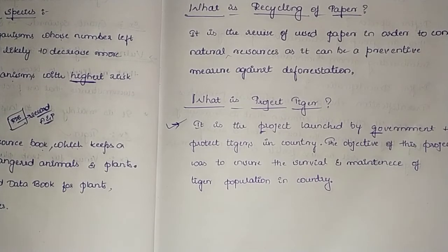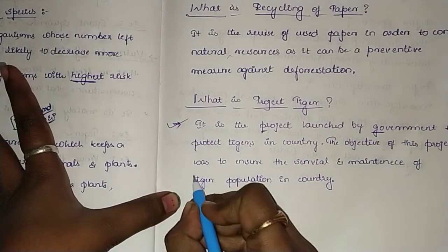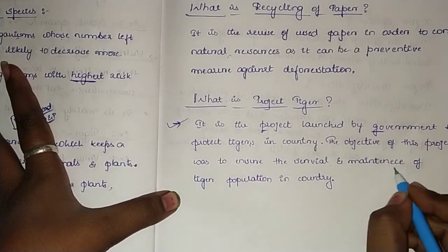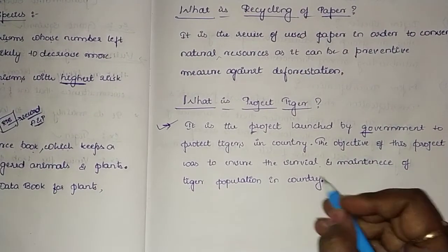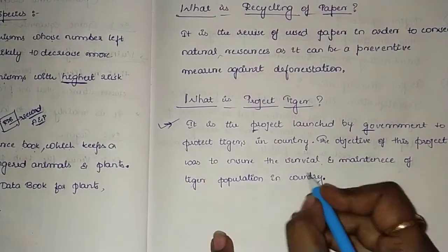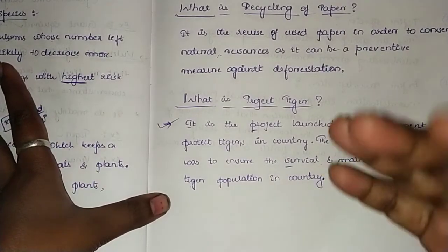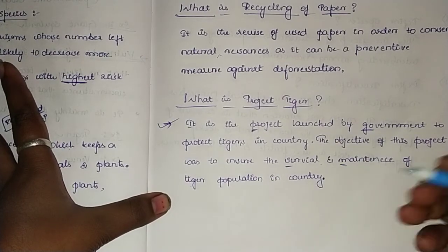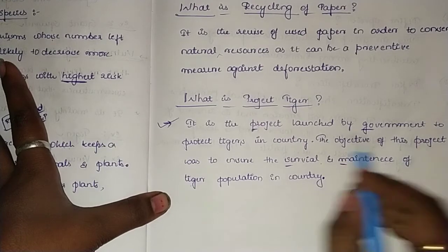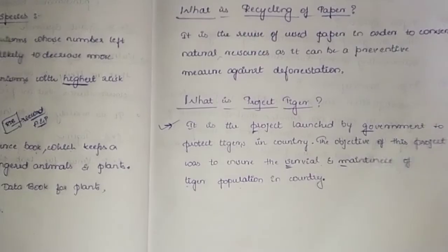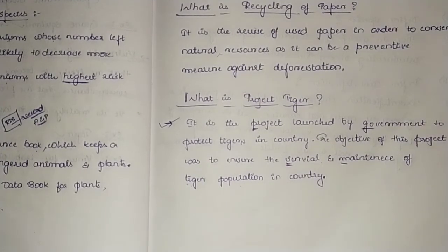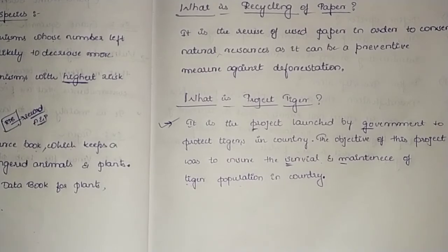We really do need to protect tigers, isn't it? So they launched the project called Project Tiger. The objective of this project was to ensure the survival and maintenance of tiger population in the country. That is what Project Tiger means — the government launched it to undergo the survival and maintenance of tiger population.